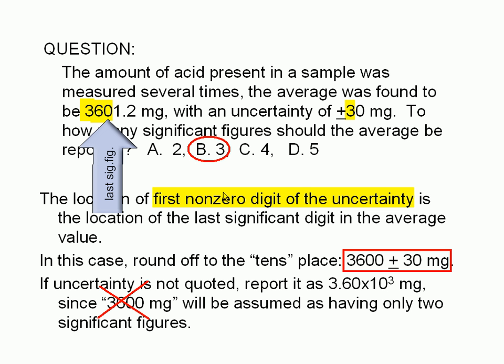We should write it in scientific notation so that we can communicate to the reader that the first of the two trailing zeros is in fact significant and that the last zero is not significant. We should report it as 3.60 × 10³ milligrams.